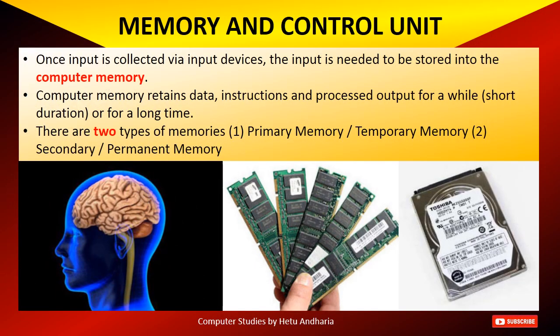After the input unit we come to the next unit — memory and control unit. Once input is collected via any input device, the input needs to be stored in computer memory. Computer memory retains data, instructions, and processed output for a while or for a longer time. There are two types of memory: primary memory and secondary memory, also called temporary memory and permanent memory. The middle picture shown is of RAM, which is a temporary memory, while the right-hand side picture is of a hard disk, which is permanent memory. The control unit is like the brain of the computer.